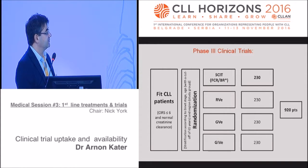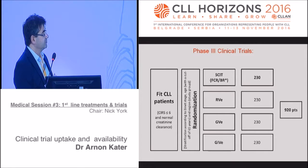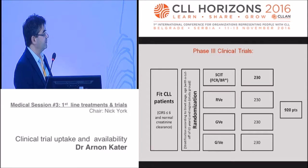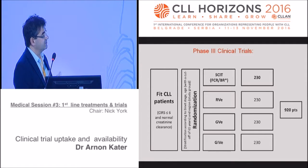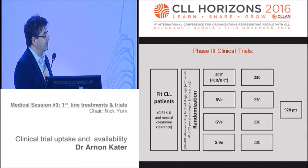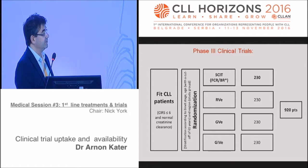An example of a phase 3 trial is the Dutch-Nordic-German CLL13/GAIA trial, where patients are randomized to standard chemotherapy (FCR or BR) versus chemo-free regimens: rituximab plus venetoclax, obinutuzumab plus venetoclax, or obinutuzumab plus ibrutinib plus venetoclax. This large randomized study should provide many answers about chemotherapy-free approaches.